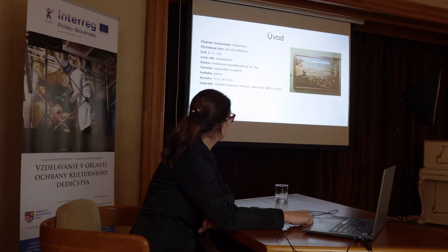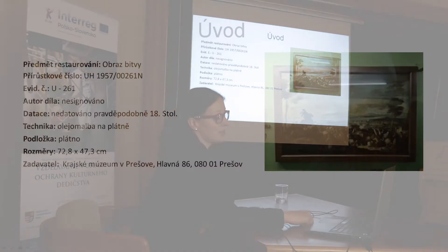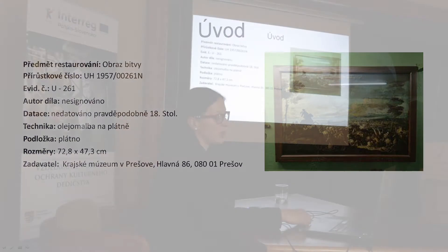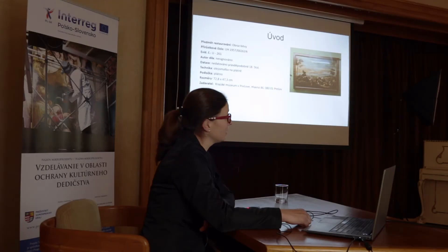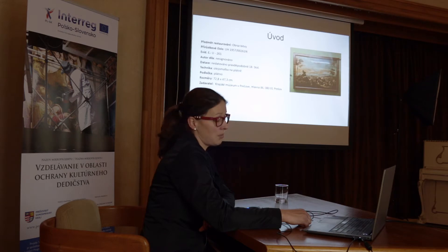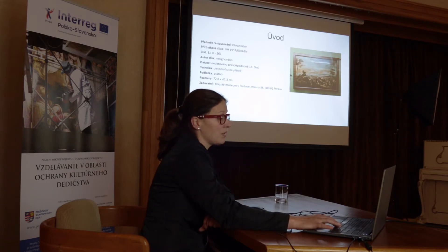Tohle je úvod, kdy vždy před každým restaurováním i v každé restaurátorské dokumentaci musíme mít nějaká základní informace, nějaké základní údaje o tom díle. Jenom abyste si udělali představu, o co se jedná – je to obraz bitvy, který je tady před vámi na tom stojanu. Toto je stav před restaurováním.